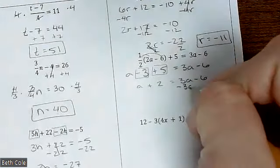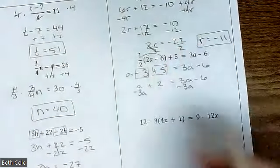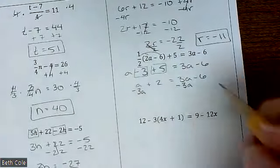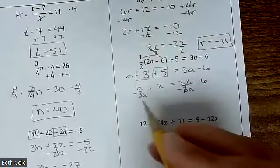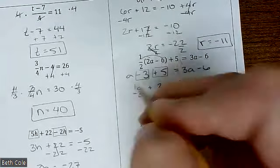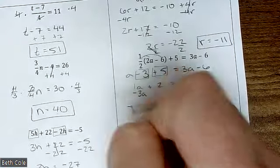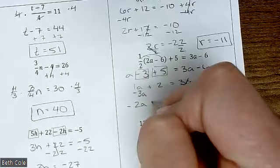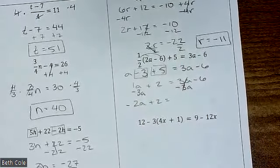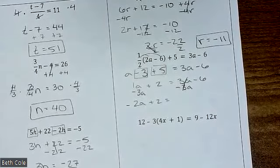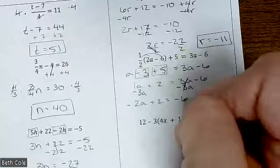Yeah, minus 3a — see how I lined the a's up together. It's not really about being smart, it's about staying organized. What would that give us? You have one a minus 3a — it will end up negative. Good — negative 2a plus 2. Equals — this is tricky, this is why this is on the advanced section. What's on the other side? Negative 6.